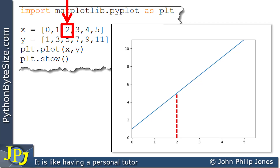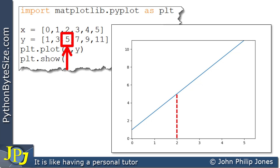Looking at the corresponding y value, which is 5, I'm going to show the dotted line here. With the coordinate position (2, 5) we have a dot appearing here which I'm showing in yellow.